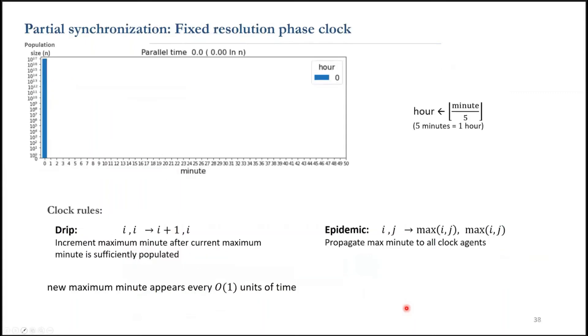So what are the rules of our clock? Every agent starts with minute and hour equal to zero. When two agents with the same minute value i interact, one of them increments its minute. We call this reaction drip.